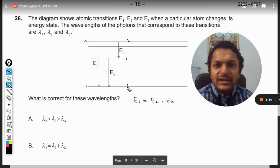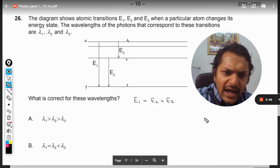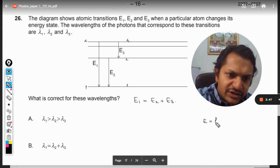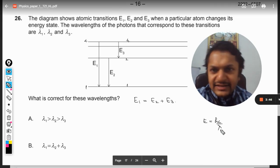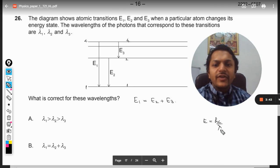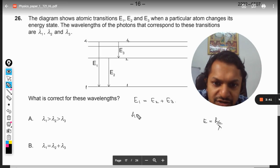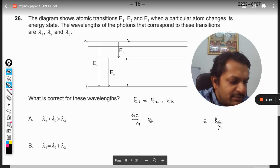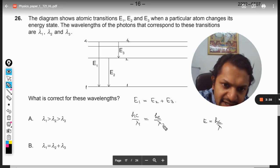And there is this formula for the energy which is given by hC by lambda. So in terms of wavelength, I will just substitute it here, so it is hC by lambda 1, hC by lambda 2, hC by lambda 3.